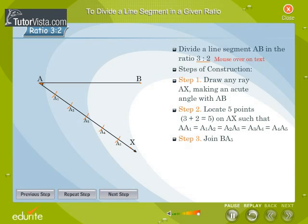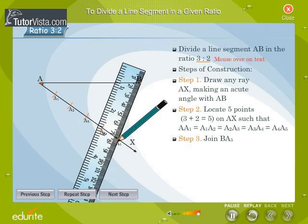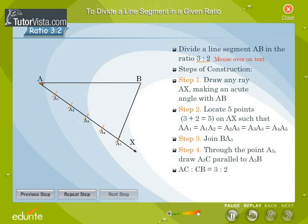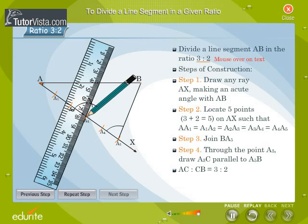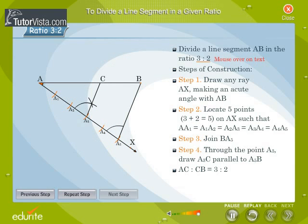Step 3: Join BA₅. Step 4: Through the point A₃, draw A₃C parallel to A₅B. AC : CB = 3 : 2.